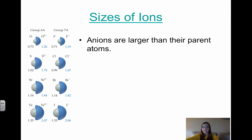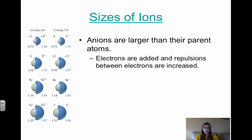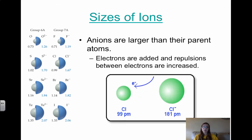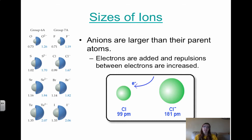Now focusing on anions: cations are smaller than their neutral atom, while anions are larger than the neutral atom. This is because we are adding electrons, so repulsions between electrons are increasing and that increases the size. The non-metals are the ones that form anions — the negative non-metal ions result from adding valence electrons. These anions are negatively charged and larger, and we have to consider what happens as we go left to right and up and down a group.